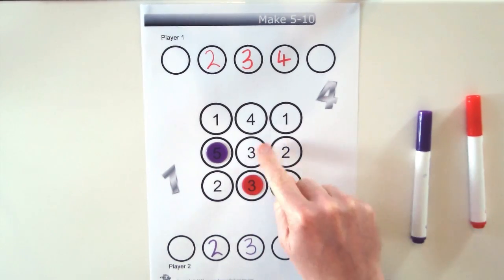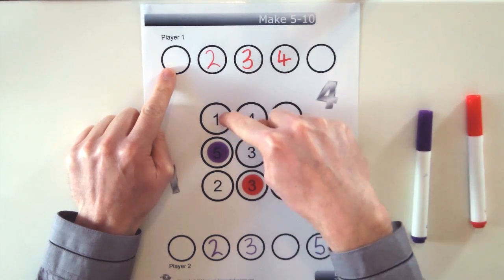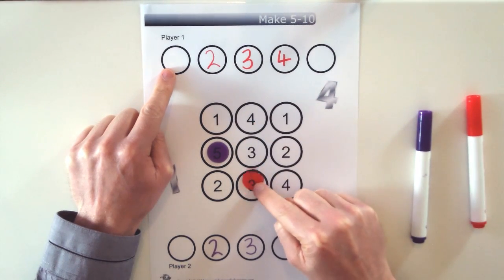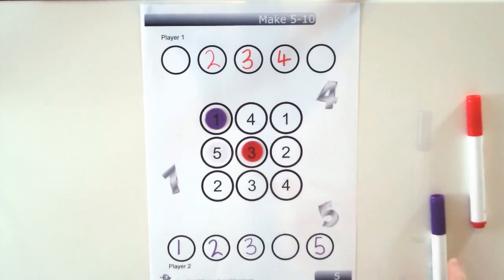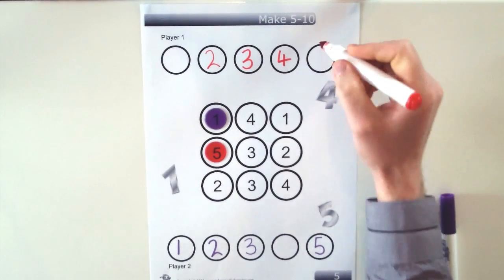So red, what does red need, a 5 and a 1, there's a 5 there and there's a 1 there. So they're going to move up towards the 5 and the 1. Now red can move over to the 5 and put a 5 there.